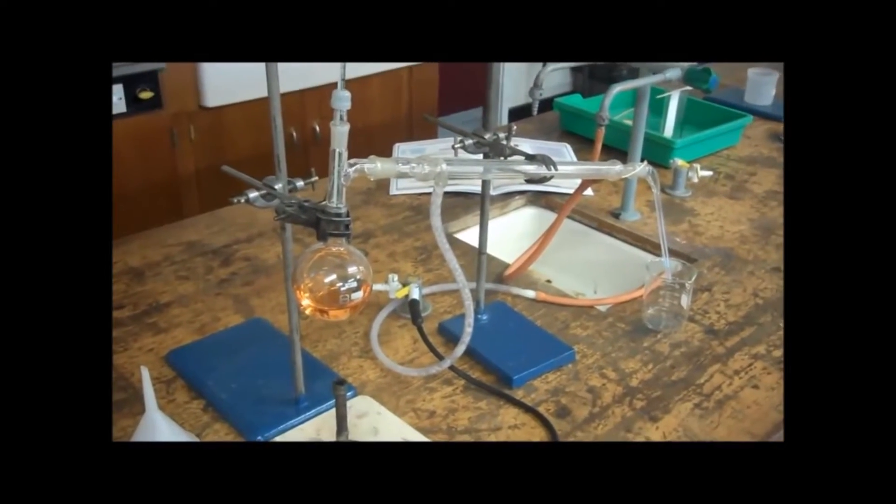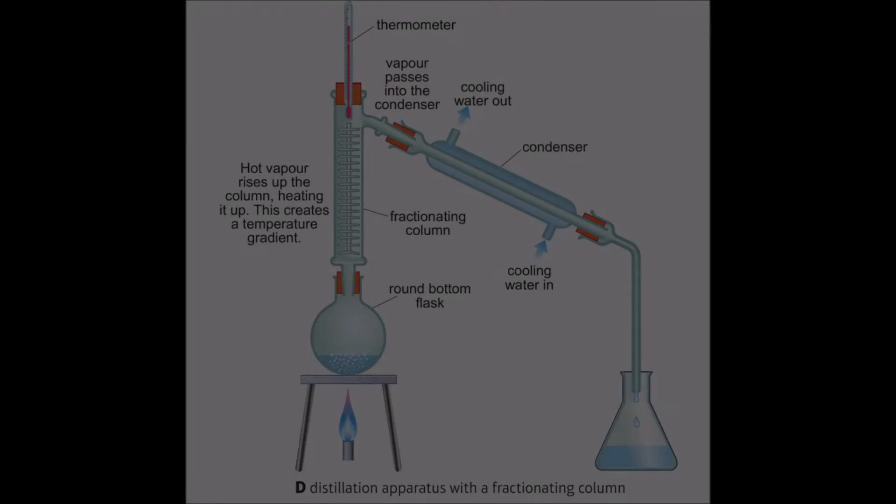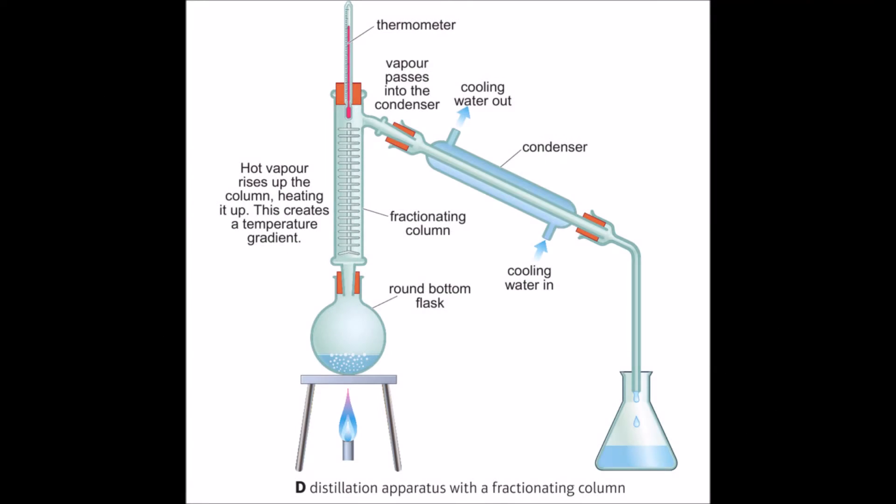Here for example we have ethanol and water that has been dyed a different color. Distillation apparatus is made up of a round bottom flask. It can have a fractionating column and then it has a condenser. That condenser has water flowing around the outside which is used to cool down the liquid, and then it has some sort of delivery device which will collect the liquid at the bottom. This apparatus as a whole is called a still.